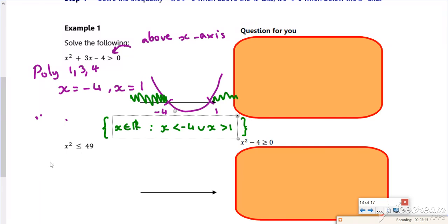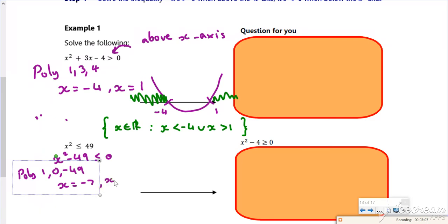This one, same idea, just need to rearrange it a little bit. So I've got x² - 49 ≤ 0. In poly, same idea, I put 1, 0, and -49, that gives out x is -7 and x is 7. Graph it, so I've done the solve it bit.